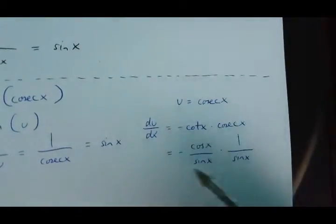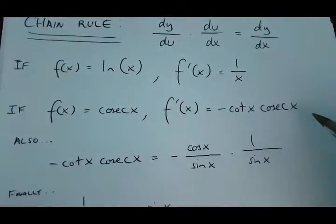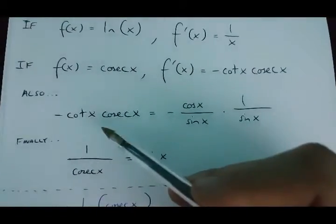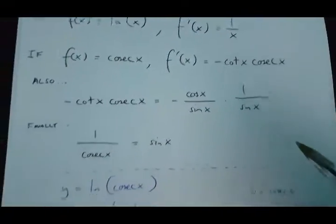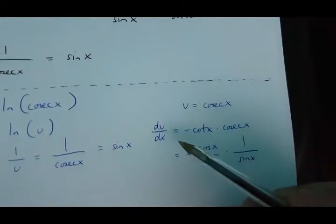And this is equal to minus cos x over sin x times 1 over sin x. Now, this over here is true because of this rule, and also because of this rule.